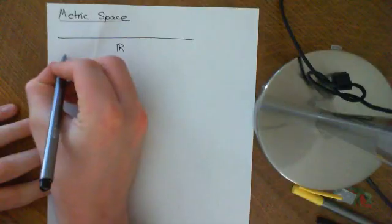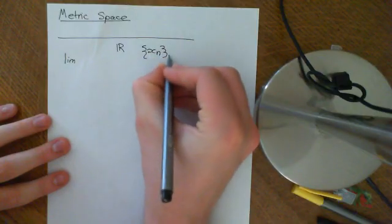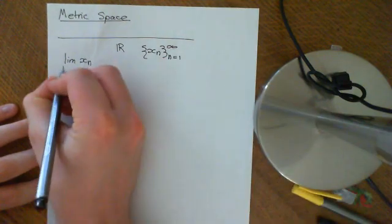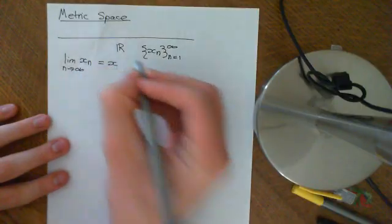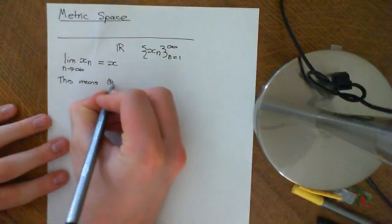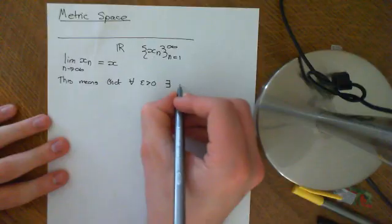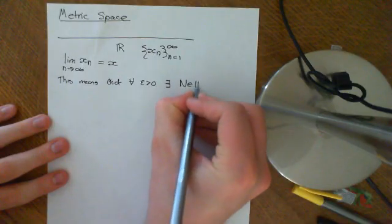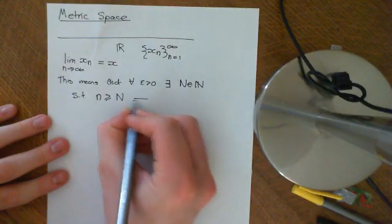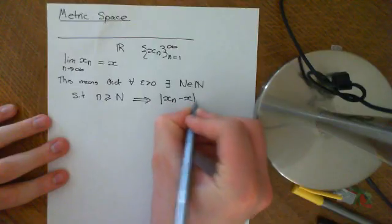If you have a limit in the real numbers — say we have a sequence x_n, n equals 1 to infinity, which is a sequence of real numbers with a limit — so the limit of x_n as n approaches infinity equals some x. What does that mean? This means that for all epsilon greater than zero, there exists a big N which is an element of the natural numbers, such that if little n is greater than or equal to big N, it implies that the modulus of x_n minus x is less than epsilon.